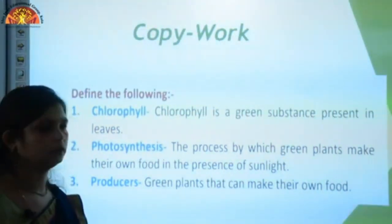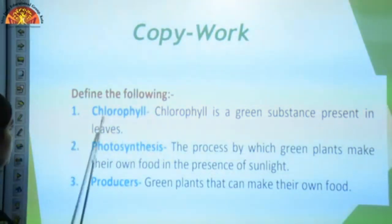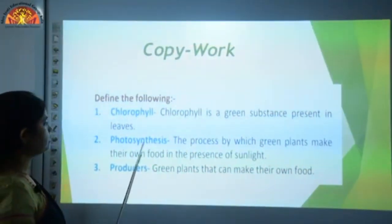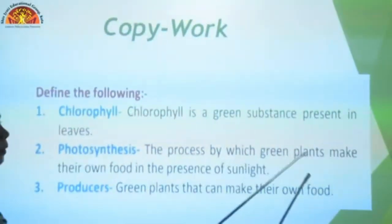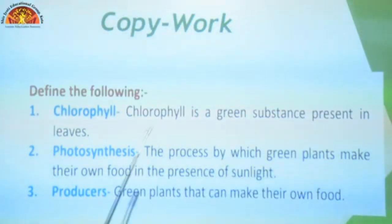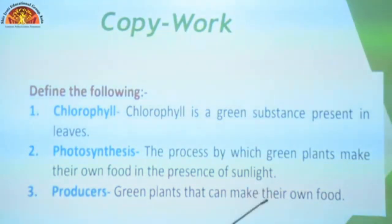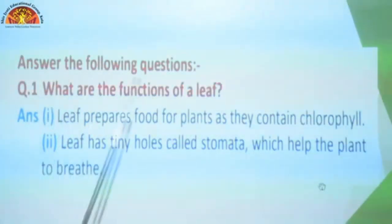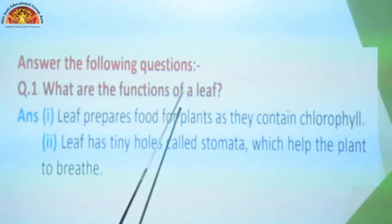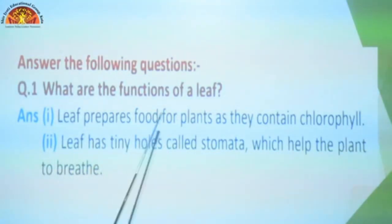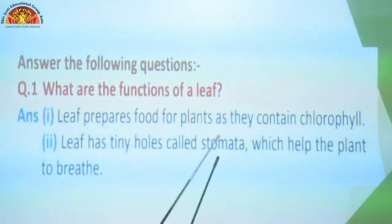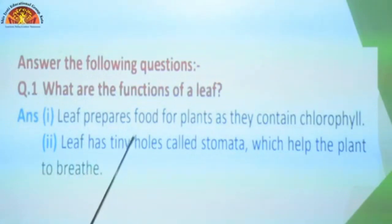Now we come to the copy work — let us start with the definitions. First: chlorophyll — chlorophyll is a green substance present in leaves. Second: photosynthesis — the process by which green plants make their own food in the presence of sunlight. Third: producers — green plants that can make their own food are called producers.